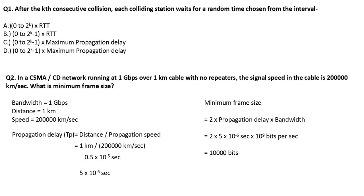Each colliding station — for example, there are two stations in which packets are colliding. After a collision, there is a random time for which they wait, and then the packets are retransmitted again. This is the interval we have seen in theory — we've seen the range, that's why we are asking for the formula.